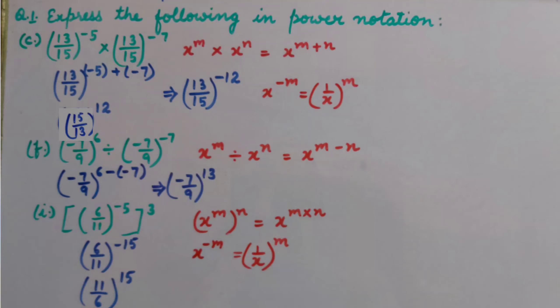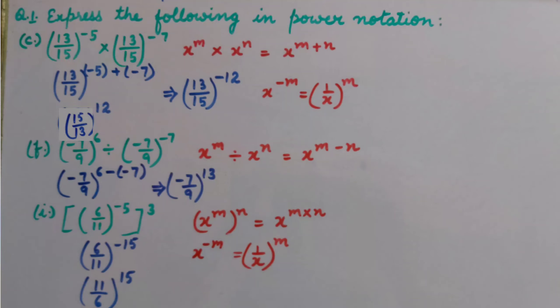We start by using the law for the product of same bases: x raised to power m, multiplied by x raised to power n, equals x raised to power m plus n. That gives us 13 upon 15, whole raised to power minus 12.